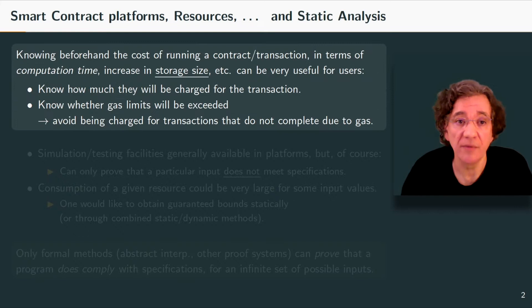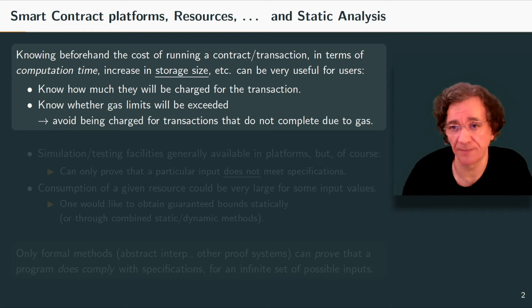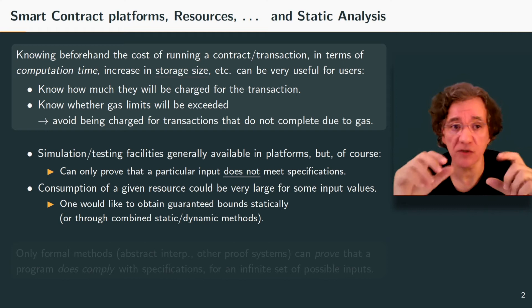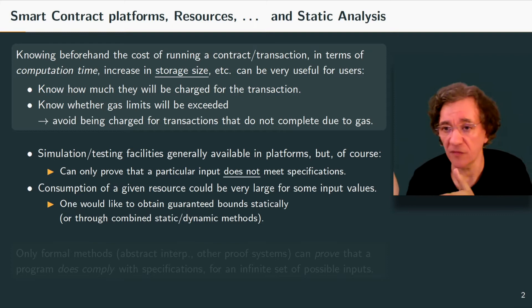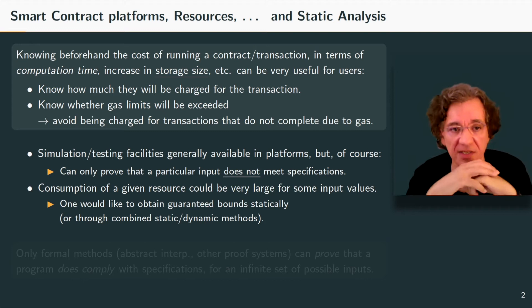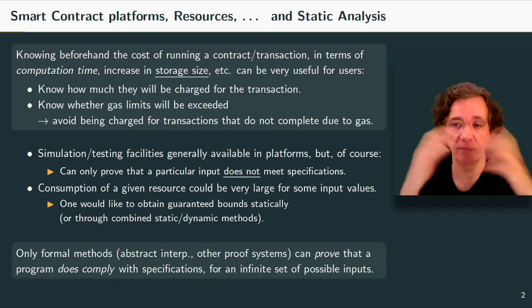Knowing before the cost of running a contract in terms of computation time or increasing storage size can be very useful for users. For example, they can know how much they will be charged for a transaction, and they can know whether the gas limits will be exceeded, meaning they can avoid being charged for transactions that do not complete due to gas. Most platforms do have simulation and testing facilities, but this only gives you the result for a particular input. You could try a number of cases, and then some other case could have a very large consumption that you may not catch.